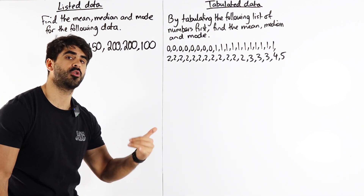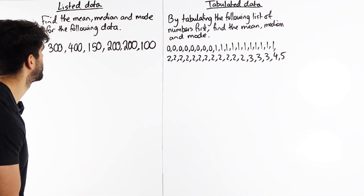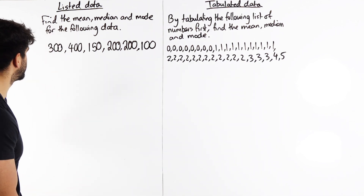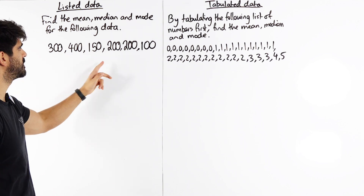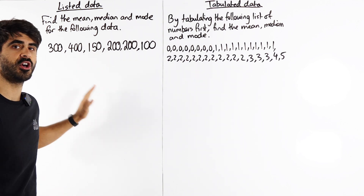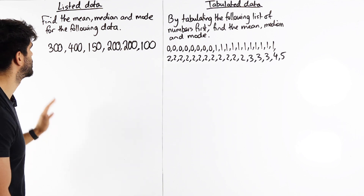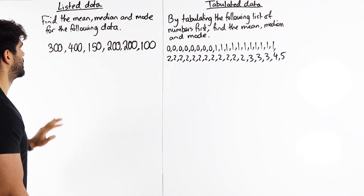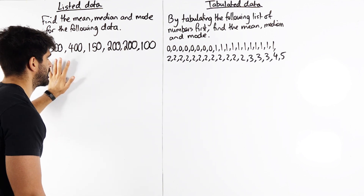Discrete means no in-between values. So here I literally have 300, 400, 150, 200, 200, and 100. There are no in-between values, so in this case we have discrete data.